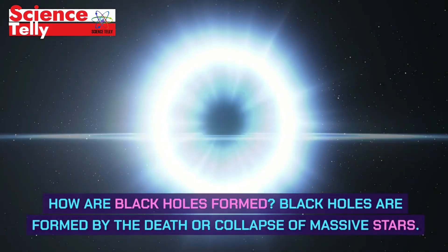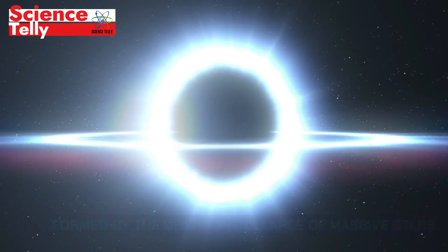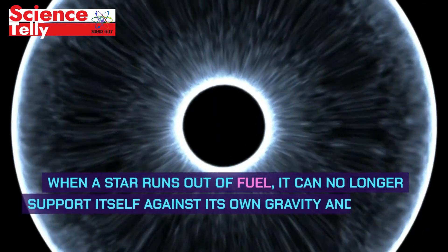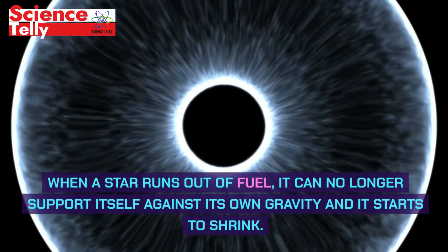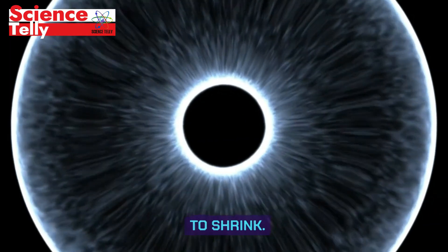How are black holes formed? Black holes are formed by the death or collapse of massive stars. When a star runs out of fuel, it can no longer support itself against its own gravity and it starts to shrink.